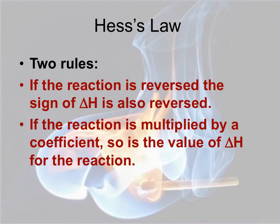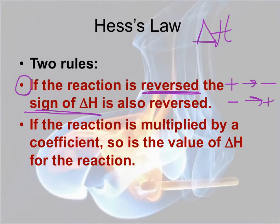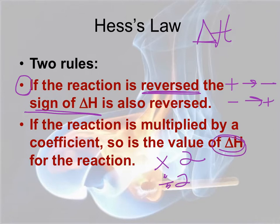Before doing examples of Hess's Law, there are two rules to keep in mind. First, if you end up reversing a reaction — the products become reactants and reactants become products — you must change the sign of delta H. If the sign was originally a plus, it becomes a minus, and vice versa. Second, if the reaction is multiplied by some factor — whether multiplied by two or divided by two — whatever you do mathematically to that equation, you must do the same thing to the delta H value.